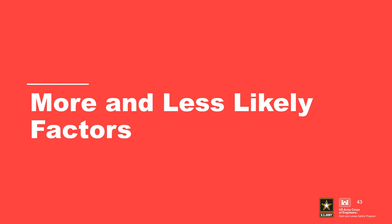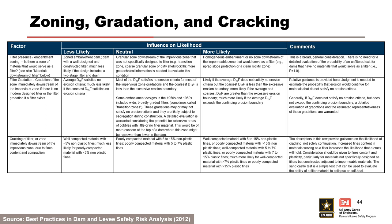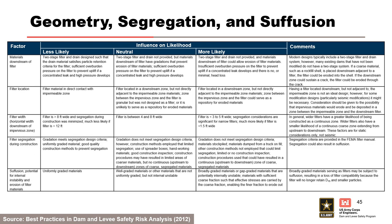The following table from the best practices manual can be used to help assess the likelihood of continuation of internal erosion. It can be used as a starting point, but the risk team must develop project-specific more likely and less likely factors to guide subjective probability estimation. The factors in this portion of the table address embankment zoning, filter gradation, and cracking. Another portion of the table addresses materials downstream of the filter, the filter location, the filter width, segregation during construction, and internal instability.